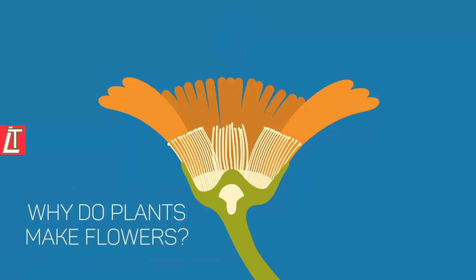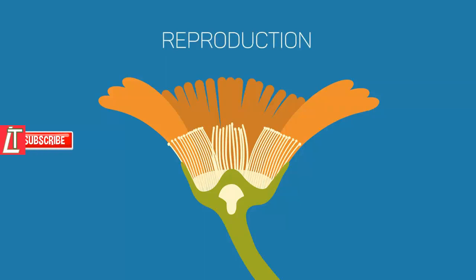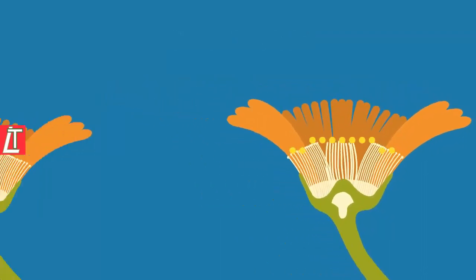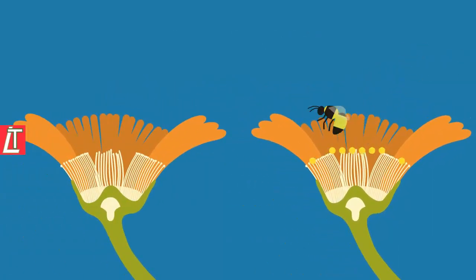Now, not all plants do make flowers, but those that do use them for reproduction. Pollen is produced and this fertilizes the ovule. Pollen is transferred from one flower to another by pollinators such as insects or hummingbirds or the wind.